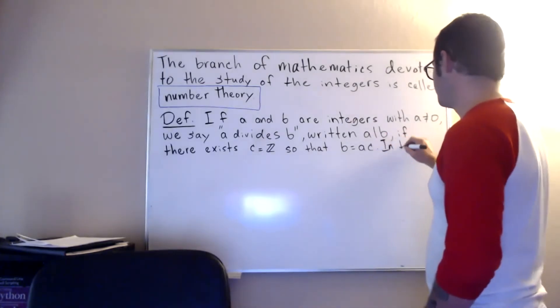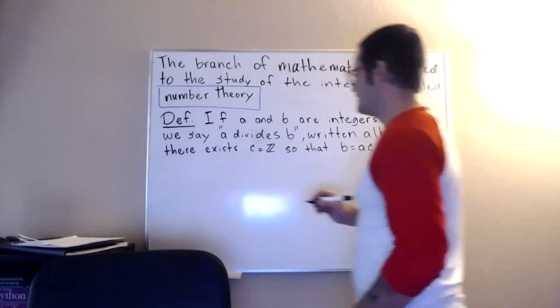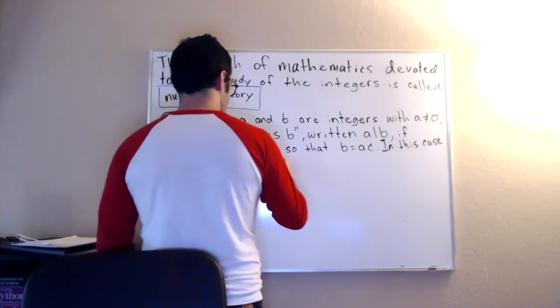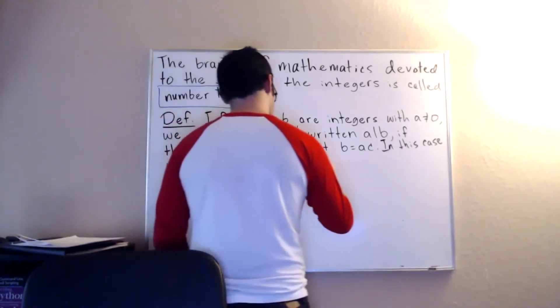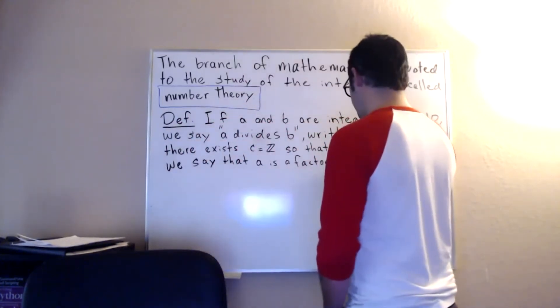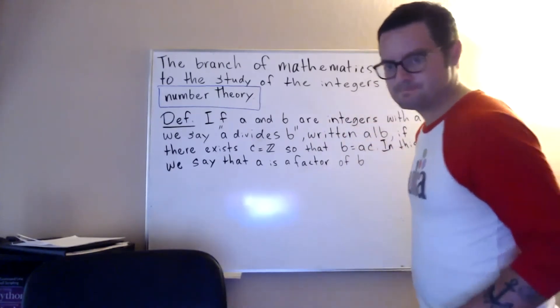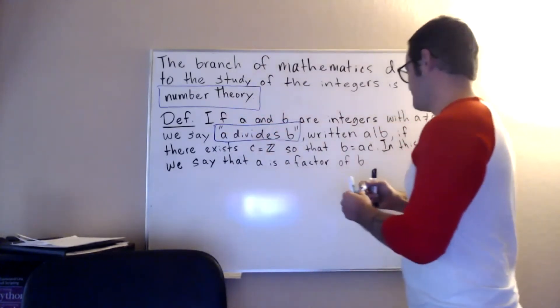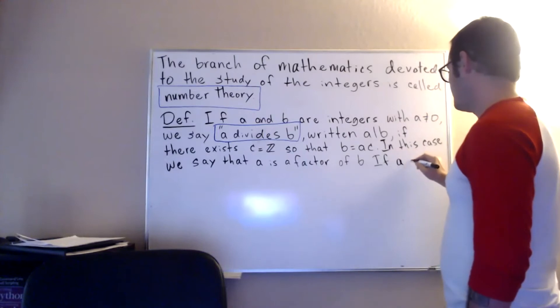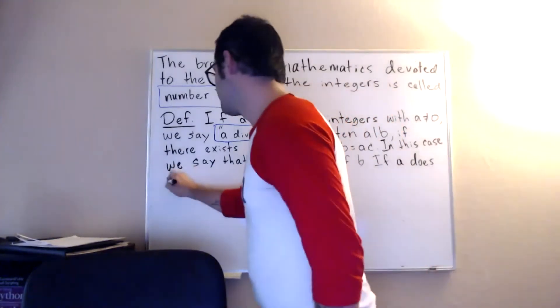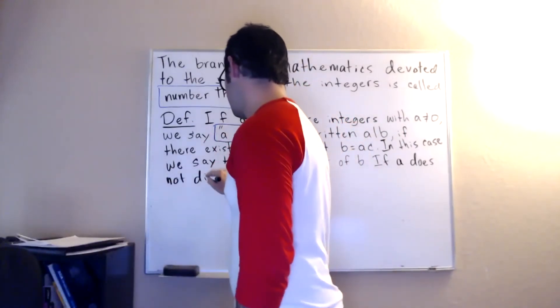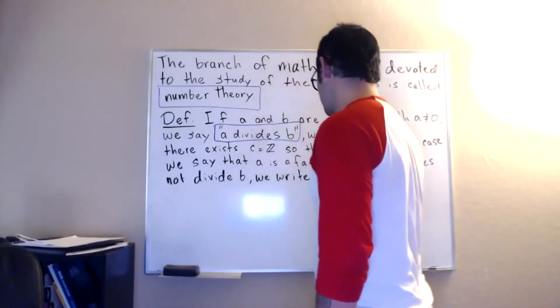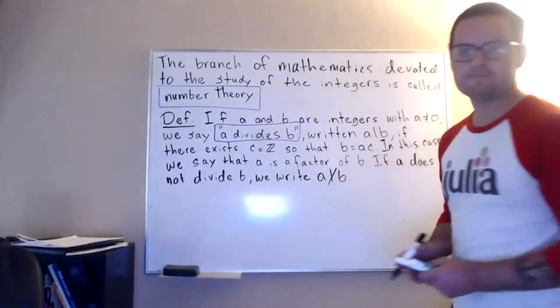Okay, in this case we say that a is a factor of b. If a does not divide b, we write a bar with a cross through it, like that.